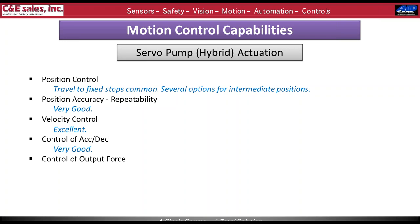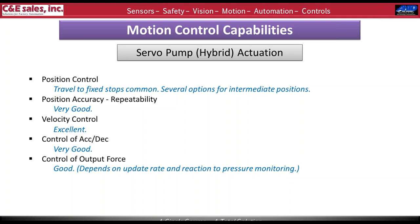Control of acceleration and deceleration is as good if not better than a traditional hydraulic system. Control of output force is also good, with a caveat: it depends on update rate and reaction times of our pressure monitoring. I do see cases where people want to use the servo motor's current output to calculate force output, but keep in mind it's always in reaction to force that has already occurred, and there are many mechanical elements between the motor and the load that degrade that capability.